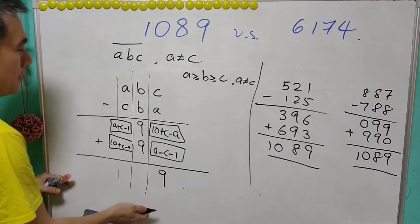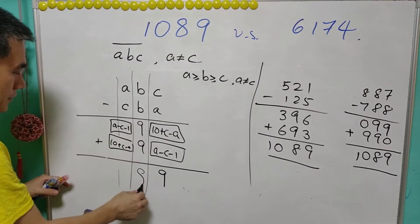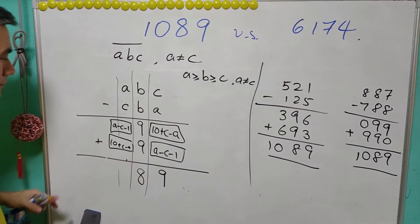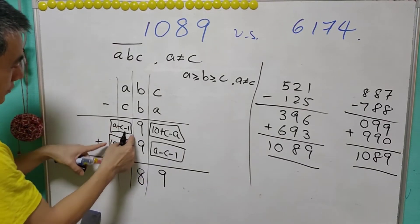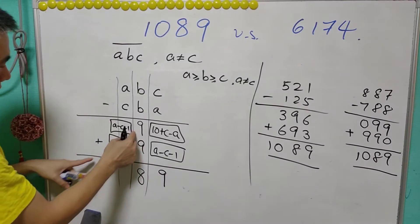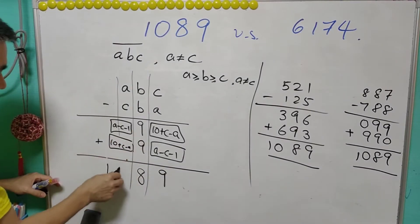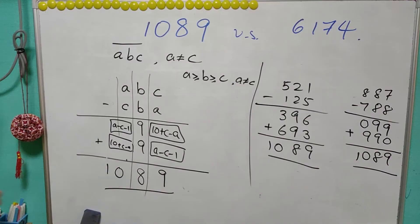You can see A will cancel off, C will cancel off, and we're left with a 9, and this 9 plus 9 is equal to 18. Carry the one, and A will cancel off, C will cancel off - that equals 9 plus 1, which is 10. A very simple proof.